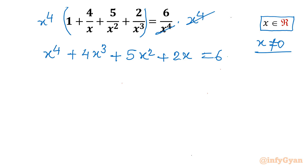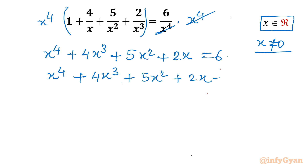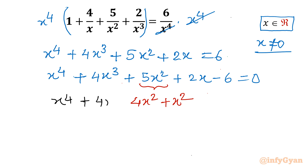Now let's move all terms to one side: x power 4 plus 4x cubed plus 5x squared plus 2x minus 6 equal to 0. I will use one manipulation — I will split 5x squared into 4x squared plus x squared. So we have x power 4 plus 4x cubed plus 4x squared plus x squared plus 2x minus 6 equal to 0.